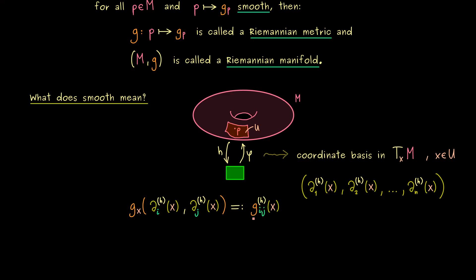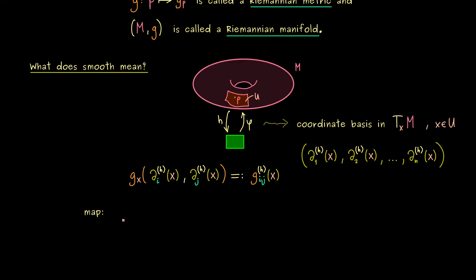However, in order to be precise, we should also put in the dependence of the chart h and the point x. So from this definition we can conclude that we have a very nicely defined map from M into R. So if you want, you could say that this is a map between two manifolds. And exactly for such maps we know what the notion smooth actually means.